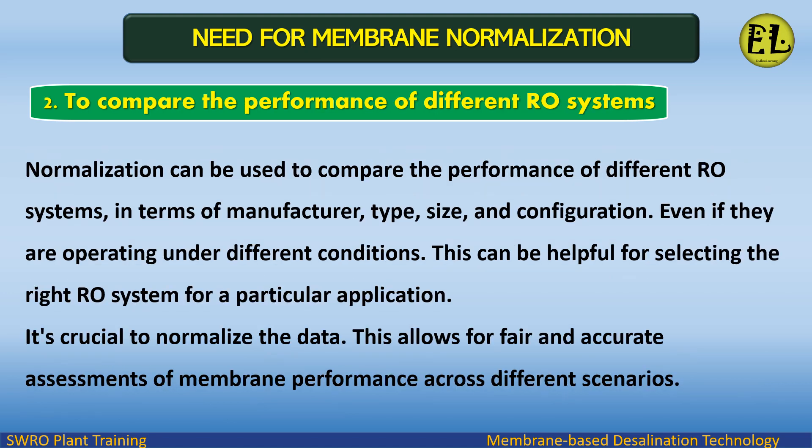Normalization can be used to compare the performance of different RO systems in terms of manufacturer type, size, and configuration, even if they are operating under different conditions. This can be helpful for selecting the right RO system for a particular application. It's crucial to normalize the data, as this allows for fair and accurate assessments of membrane performance across different scenarios.